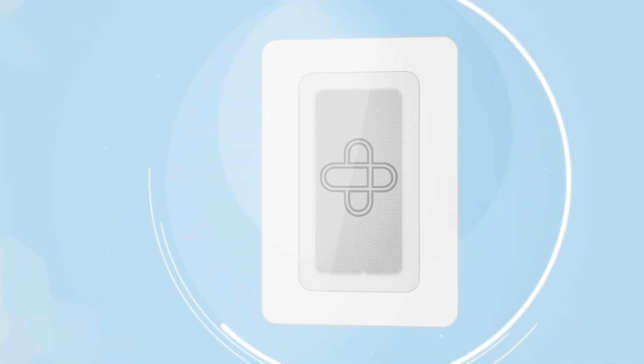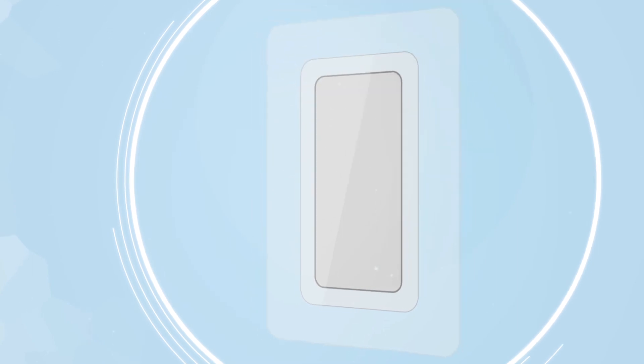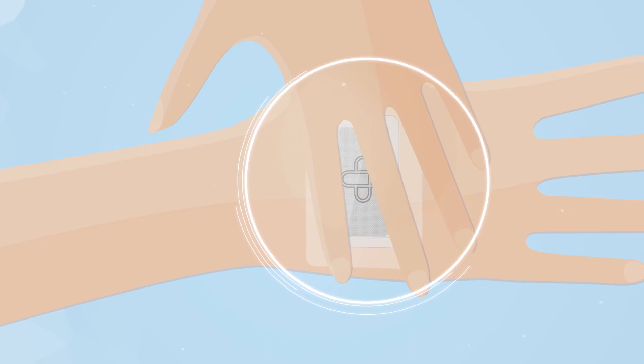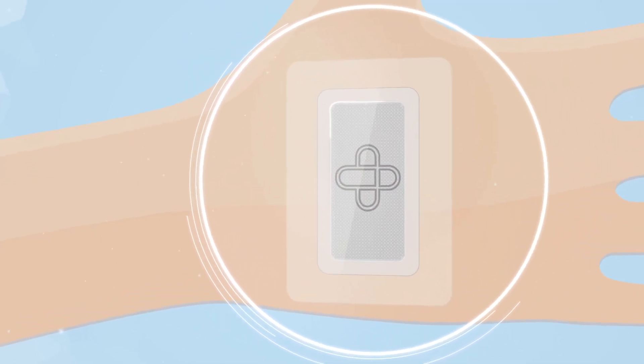Remove the adhesive tape on the back of the dressing and apply directly over the wound. Make sure that the area of the wound is completely covered by the center foil dressing.